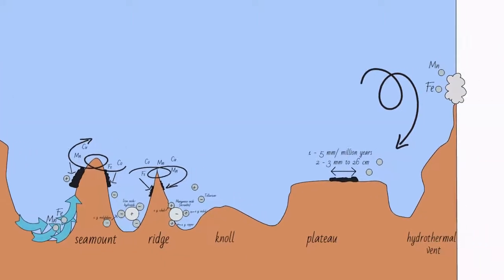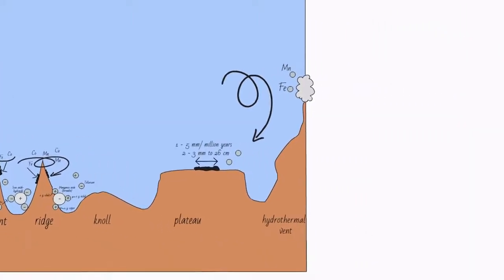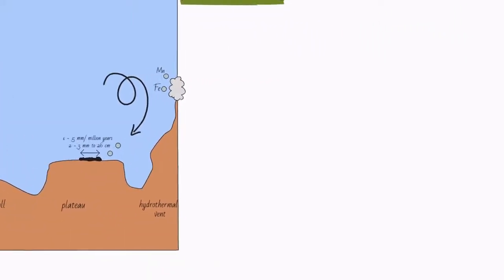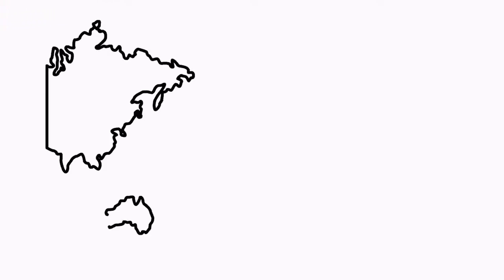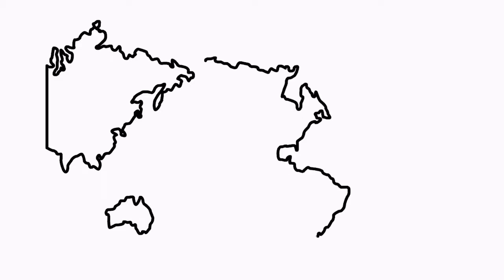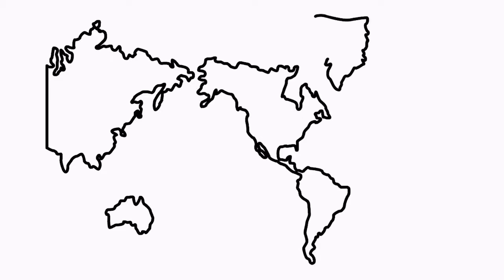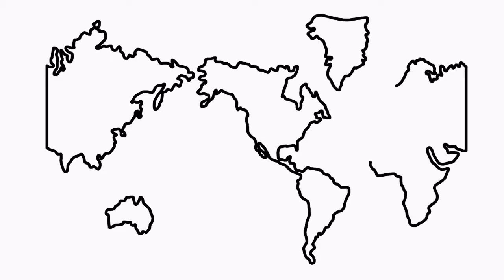The name cobalt crust is a bit misleading, as cobalt crusts are primarily made up of iron and manganese, but they are the main sources of cobalt found on Earth, with almost 2% of the crusts consisting of the element.